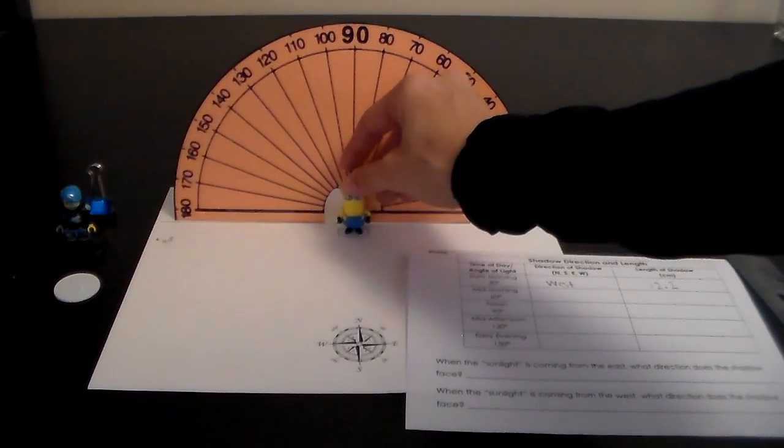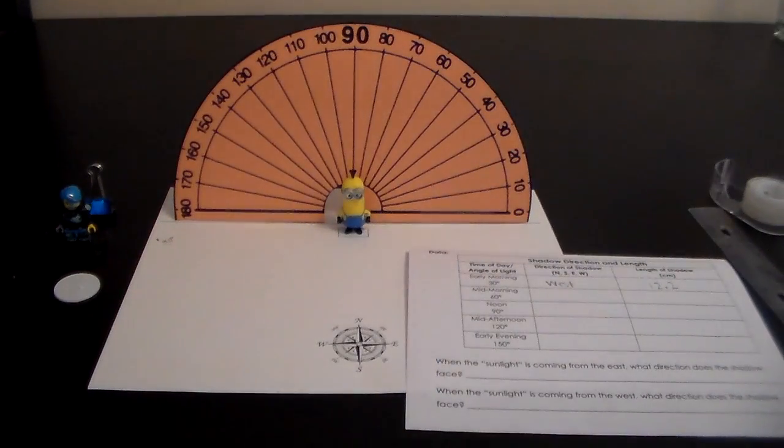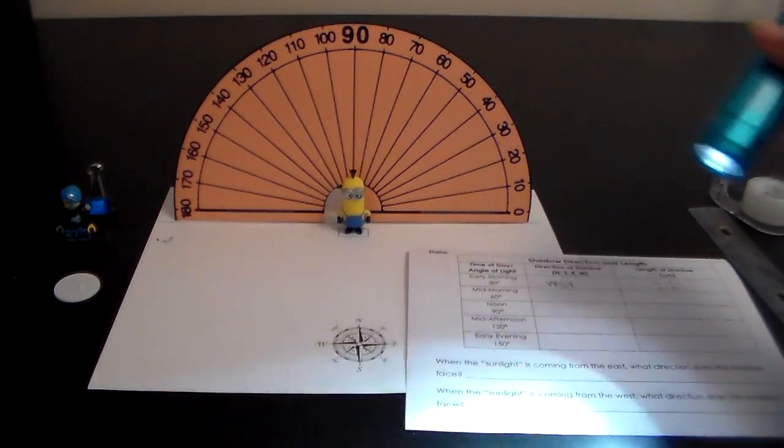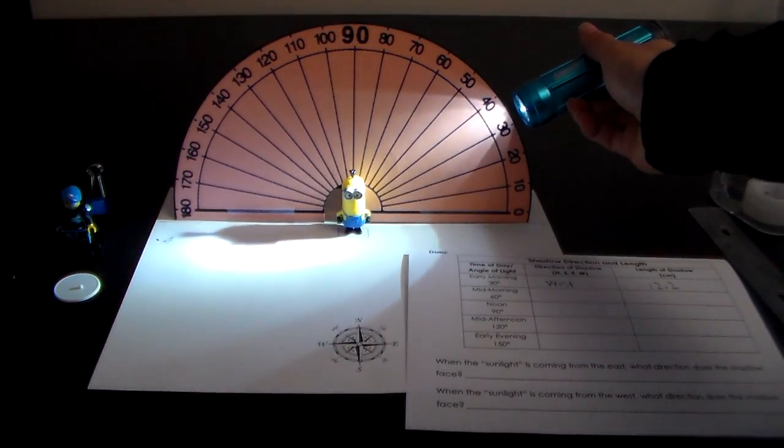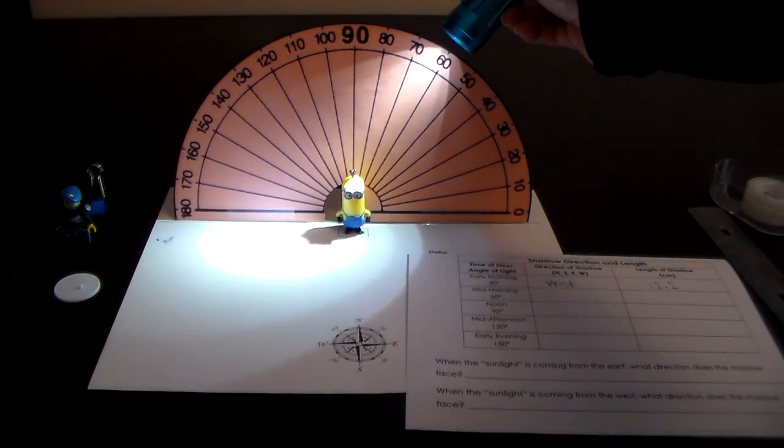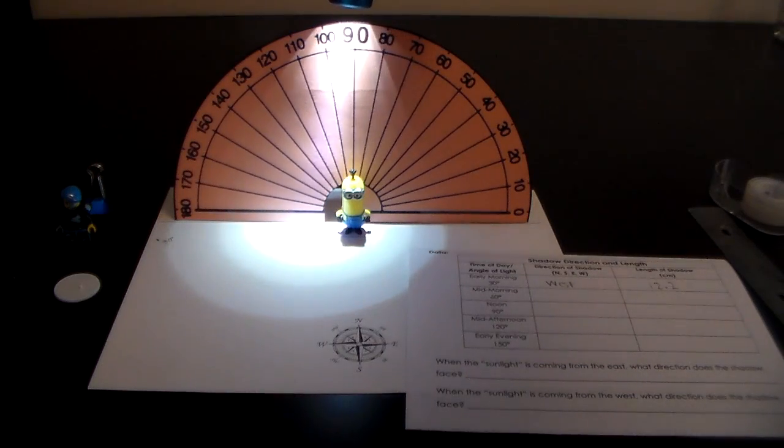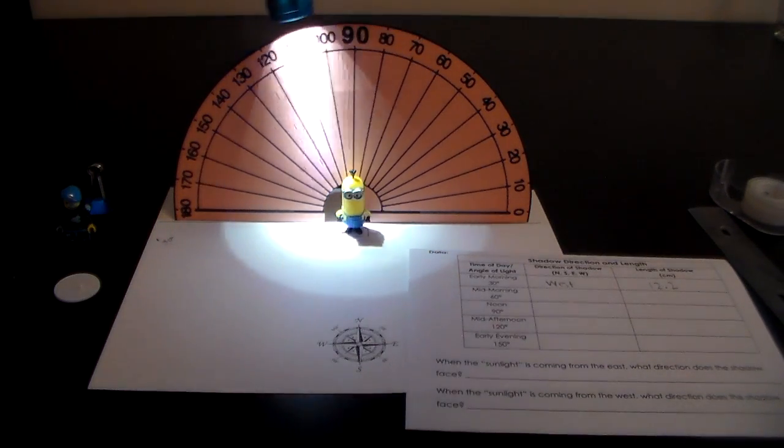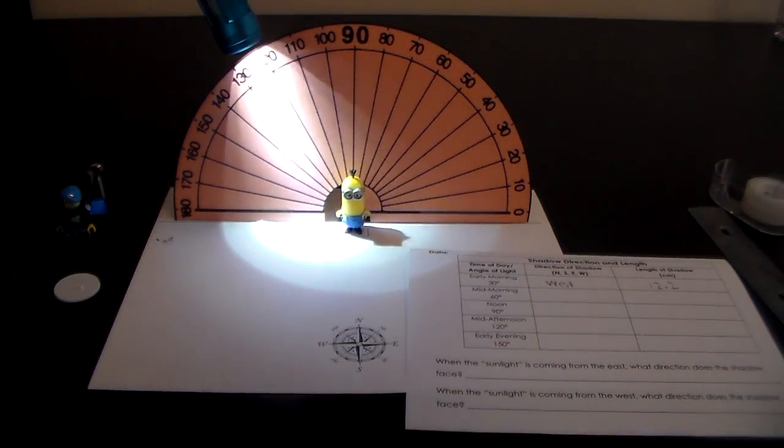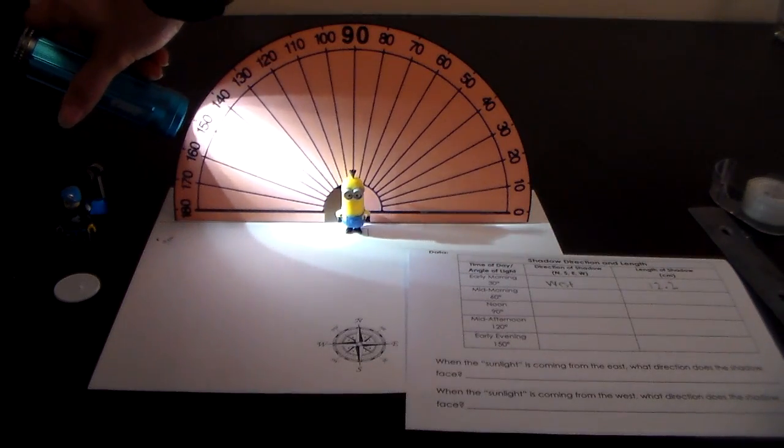Students should replace the figurine into the box and then repeat the steps that they did with 30 degrees at 60 degrees, 90 degrees, 120 degrees, and 150 degrees.